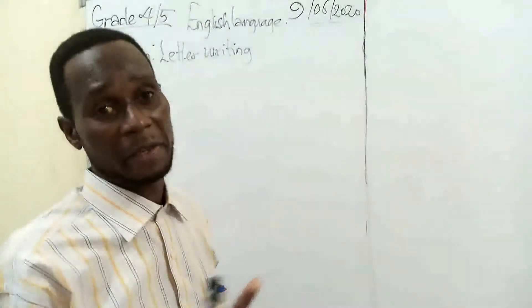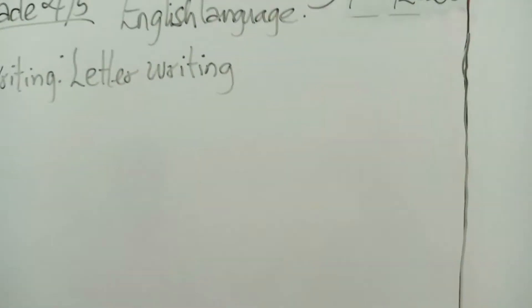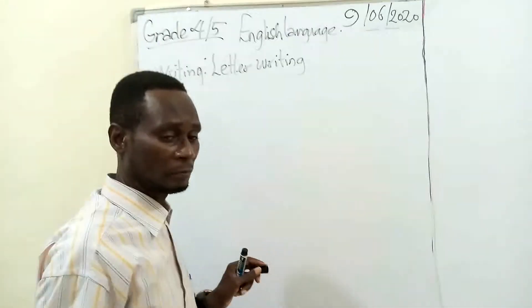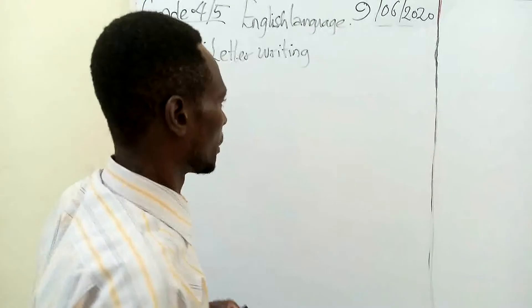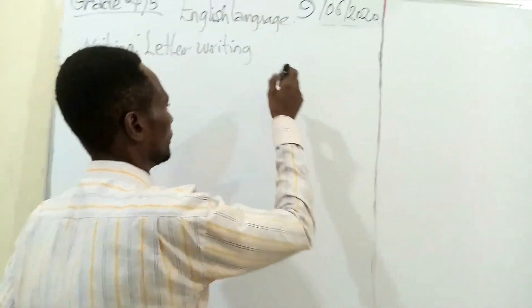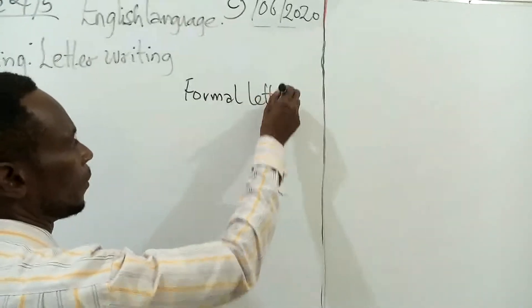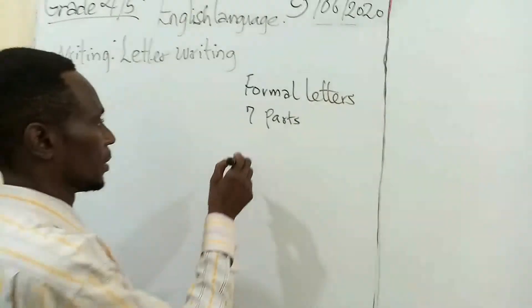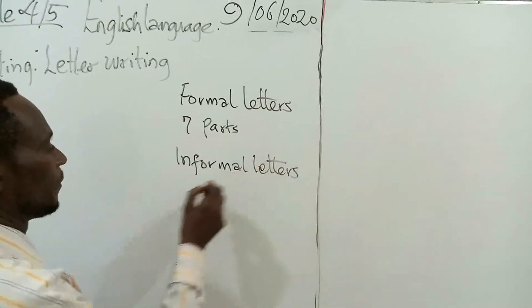If you have forgotten, I am going to do a little bit to refresh your mind over that before we enter into the format of writing. Today we are going to dwell on the format of informal letters. I told you that formal letters have 7 parts, but informal letters have 5 parts.